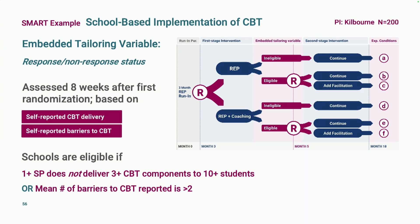The tailoring variable was assessed at one time point, eight weeks after the first randomization. It was based on two things: how many CBT sessions the school professional reported providing, and whether they reported barriers to CBT in their school setting. If the school professional didn't deliver three or more CBT components to ten or more students, they were considered eligible for facilitation. Or if the average number of reported barriers was more than two.